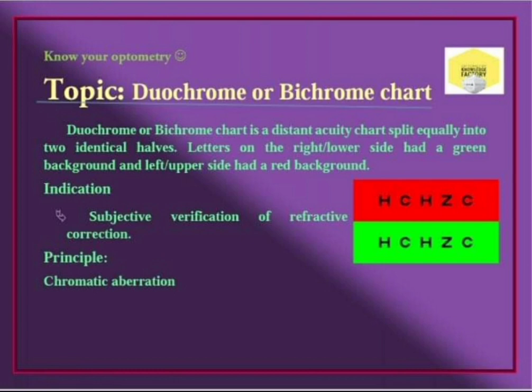In the emmetropic eye, the correct refractive correction means that both red and green sides appear equally clear. We use this chart to verify that the correction is accurate.